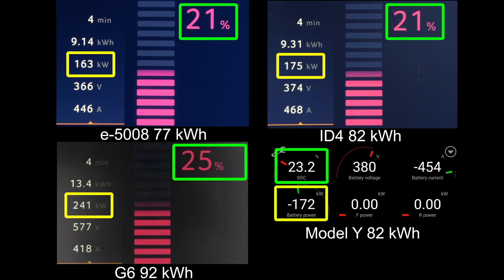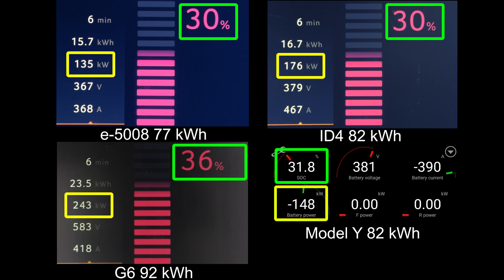But then compared to the other cars, they are charging way faster. ID4, okay, maybe not that fast, but G6 for example, XPeng G6. Also Model Y maybe hits 350, but that doesn't matter too much and we can't keep it too long.